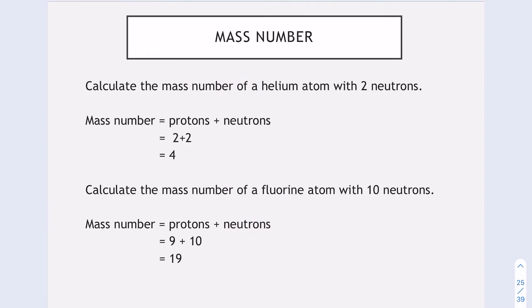Here we have two examples. Calculate the mass number of a helium atom with two neutrons. You'd go to the data book to find the atomic number, which is the number of protons, which is 2. You've been told we've got two neutrons, so we simply add them together to get 4. For fluorine with 10 neutrons, fluorine has an atomic number of 9, which means that's how many protons it's got. We've been told there's 10 neutrons, so we simply add them together to get 19.